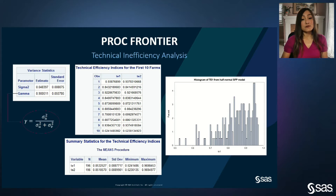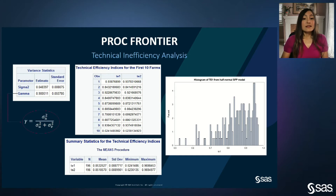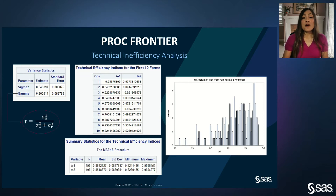PROC Frontier provides two types of technical efficiency measures: TE1 and TE2. The summary for technical inefficiency shows that on average, dairy farmers achieve 77% of the maximum potential output. Note that the maximum efficiency index is one by construction, meaning at least one farmer operates on the frontier. The least efficient farmer achieves only 44% of his or her maximum achievable output. The histogram for TE1 shows how this technical efficiency index is distributed across farmers.